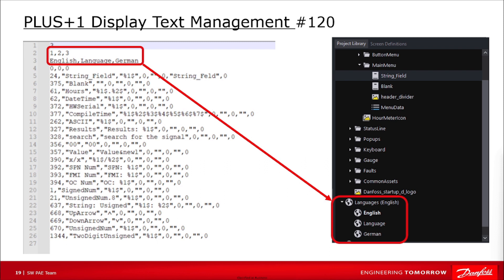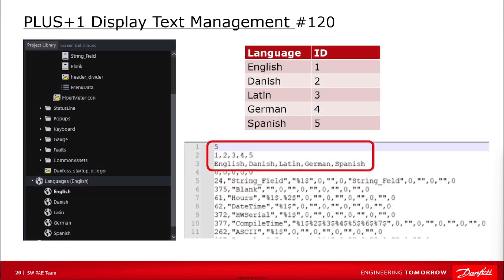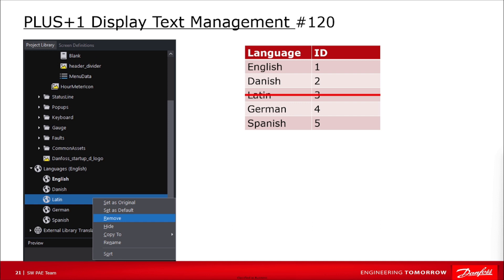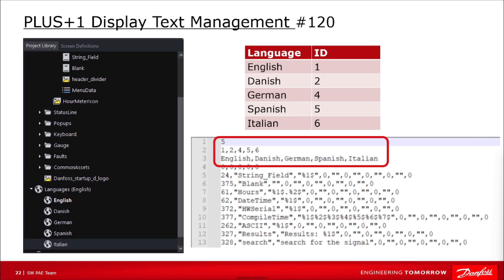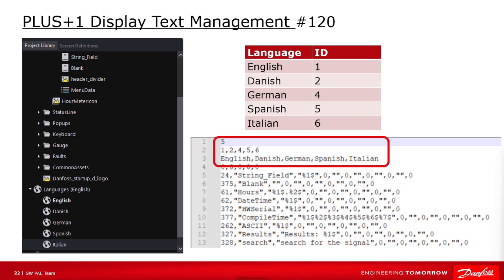When you create or add language groups inside the screen library, IDs are assigned in ascending order. If a language group is deleted, its ID is deleted as well. For example, if you create five language groups with IDs one, two, three, four and five, then delete the group with ID three and add a new one, the resulting IDs will be one, two, four, five and six — ID three is gone and ID six has been added. This needs to be known when dealing with text files shared across projects.